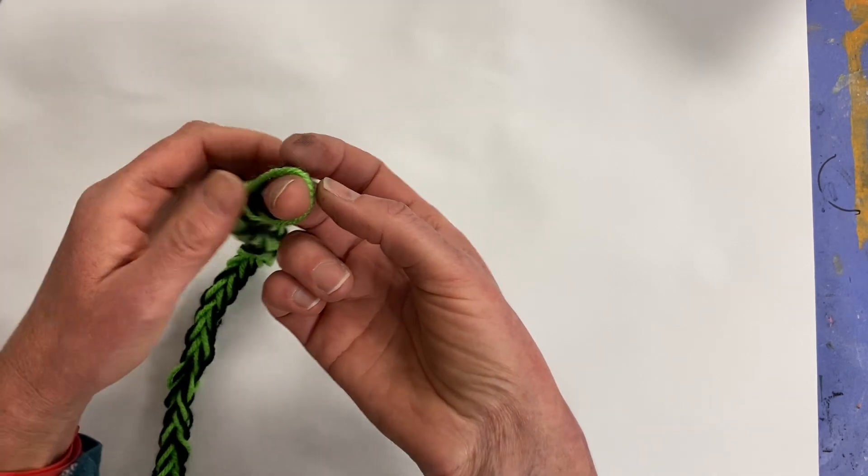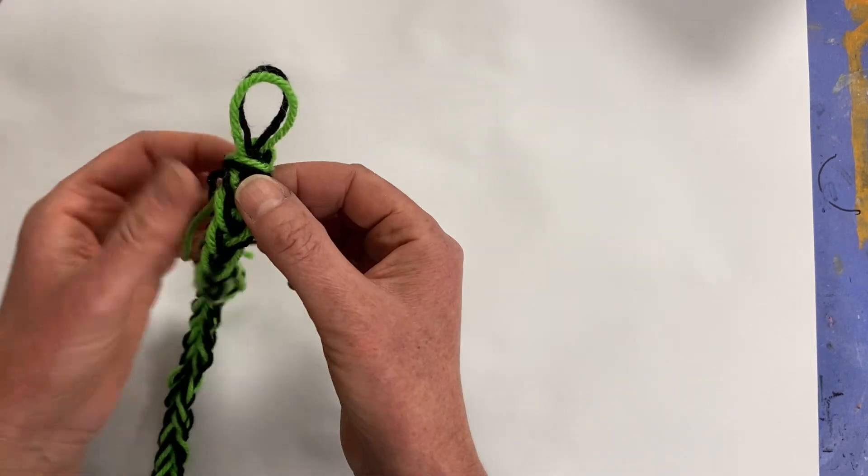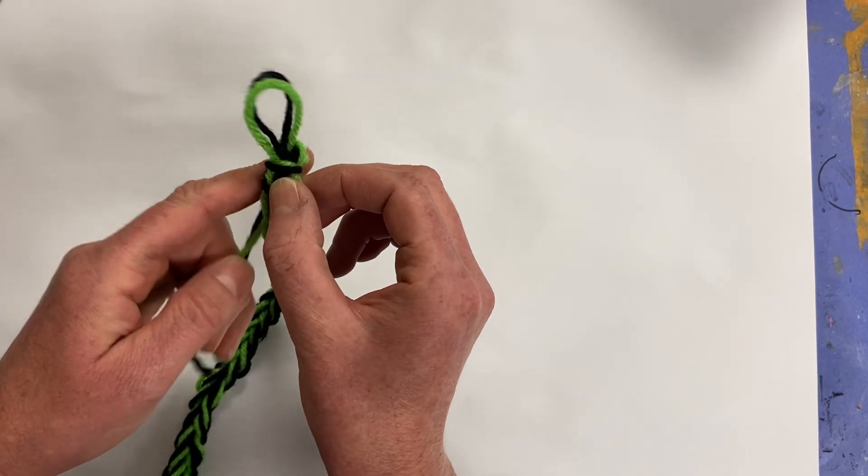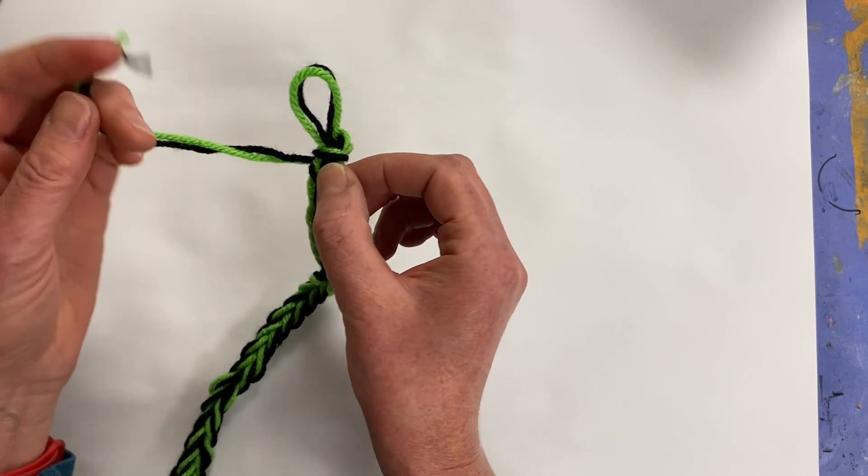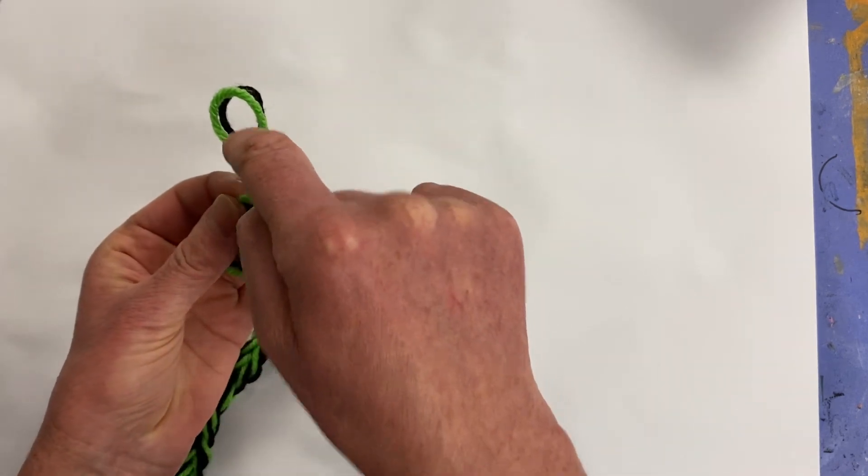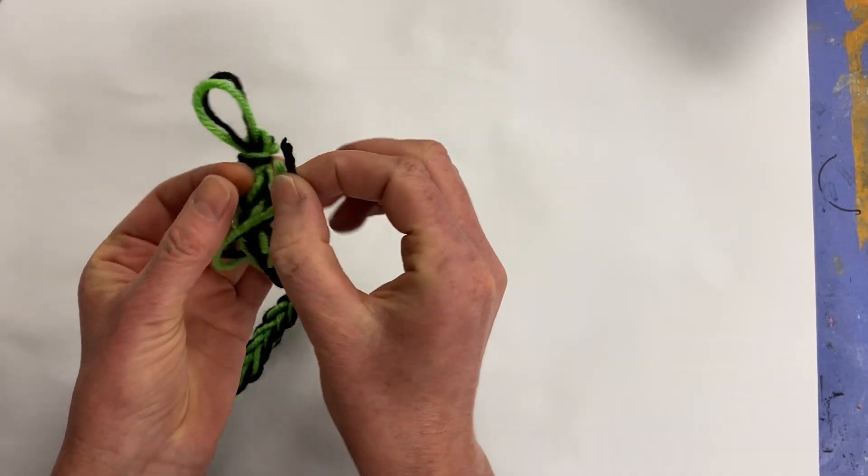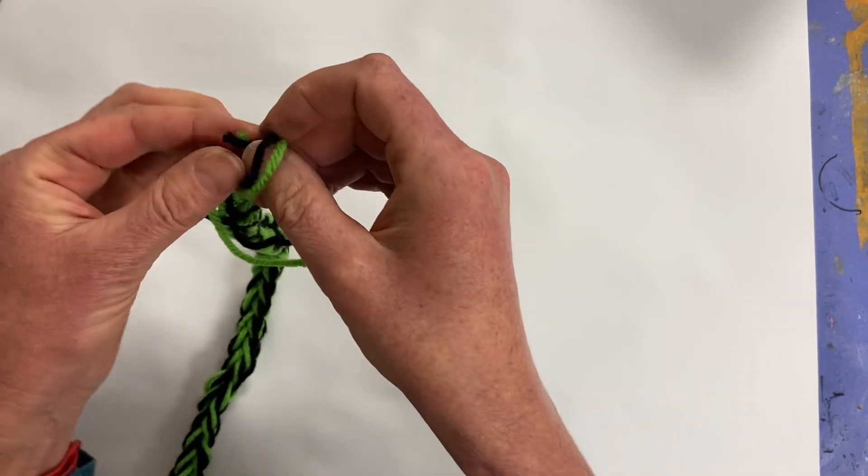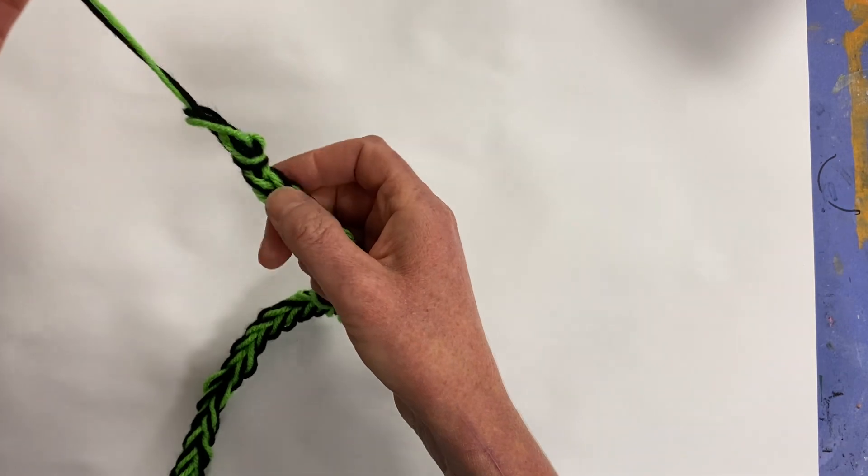Now, the other thing that you can do is you can simply take your finger off. Don't pull this tight. We don't want this loop to close up, but you're going to take those two ends and put them through that opening. So I'm going to take them and put them through. And then I simply go and I pull it tight.